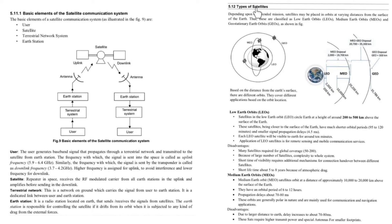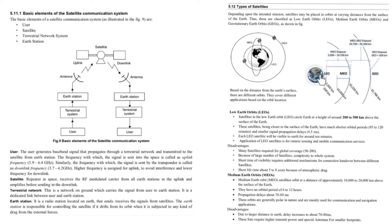Now let us understand the types of satellites. Depending upon the intended mission, satellites are placed in orbits at various distances from the surface of the earth. Hence, these are classified as low earth orbit (LEO), medium earth orbit (MEO), and geostationary earth orbit (GEO), based on distance from the earth surface and their application.